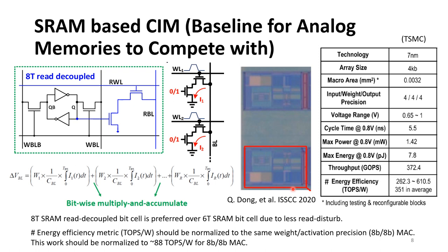I want to emphasize that energy efficiency should be normalized to the same weight precision and activation precision. In this presentation, we will use 8-bit weight and 8-bit activation precision for the MAC operation. If we normalize the numbers from the table in that paper to the 8-bit by 8-bit MAC, it should be around 88 TOPS per watt.